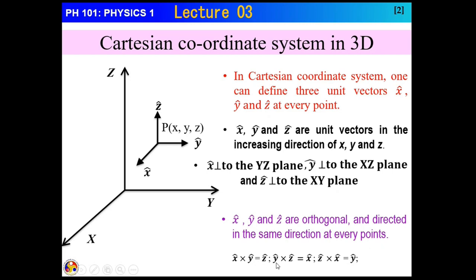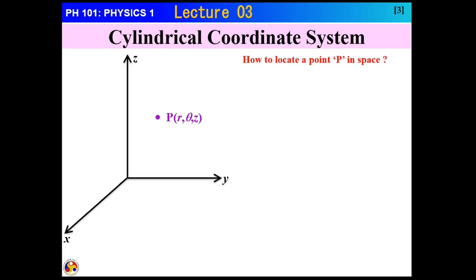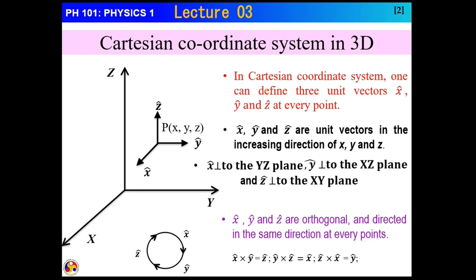The cross product of unit vector y with z gives unit vector along x direction. Unit vector z cross unit vector x gives unit vector along y. This basically satisfies the right-handed cyclic rule: x cross y gives z, y cross z gives x, and z cross x gives y. This Cartesian coordinate system extension from 2D to 3D is quite easy and simple.